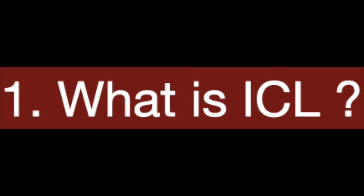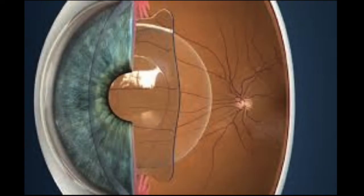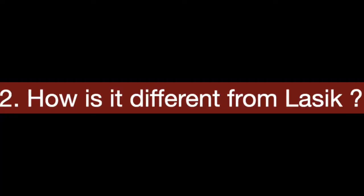The first question is: what is ICL? ICL stands for Implantable Collamer Lens. It is made up of a proprietary material called Collamer. This lens is essentially implanted in the eye to correct the power. It doesn't need any maintenance, it doesn't move in the eye, and it can be easily removed in case there is any issue.